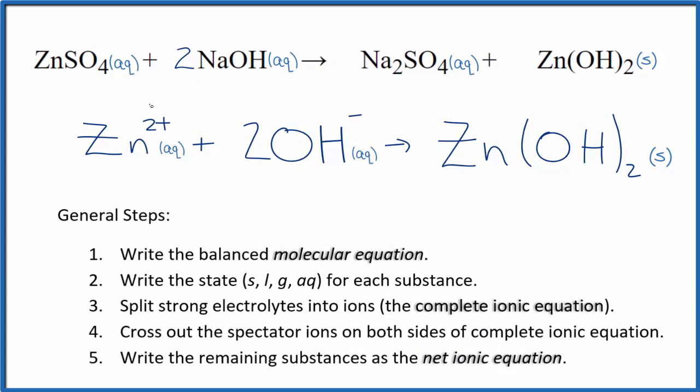So you can see charge is balanced. We have a two plus, and then we have this two times the one minus. That gives us a two minus. So they balance out—net charge of zero on the reactant side, product side. This is neutral. Net charge of zero. Charge is conserved.